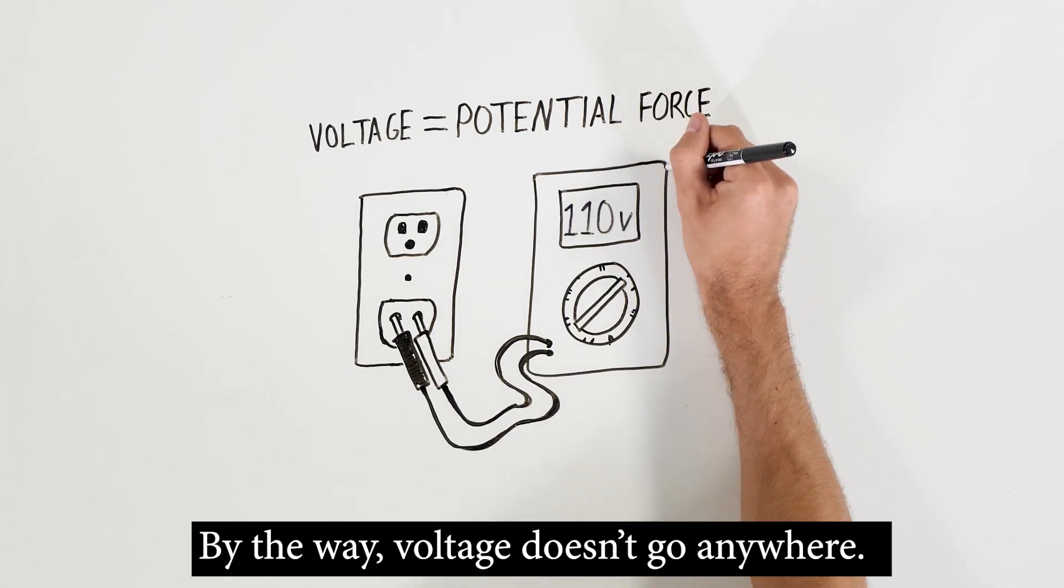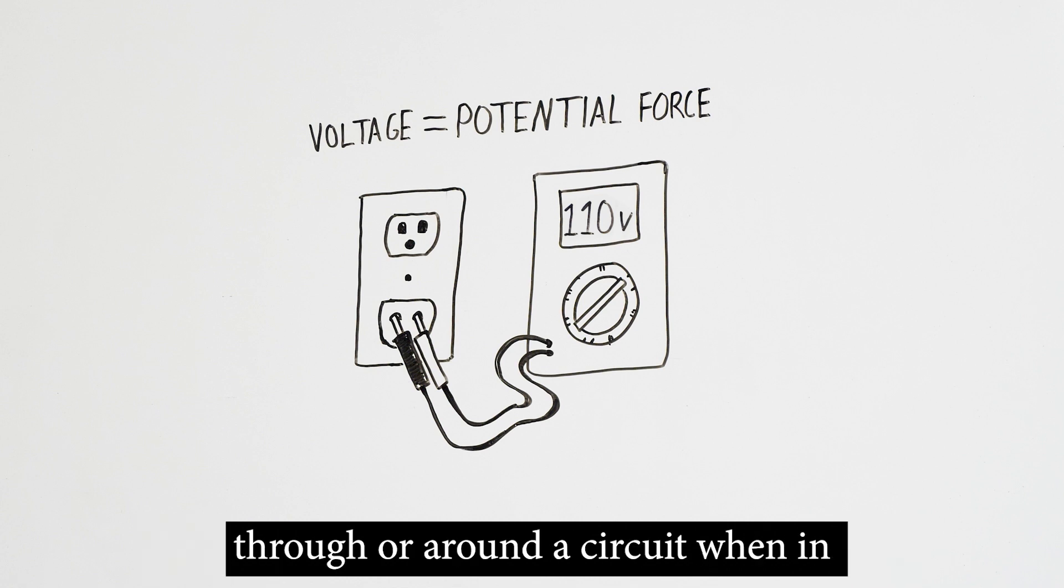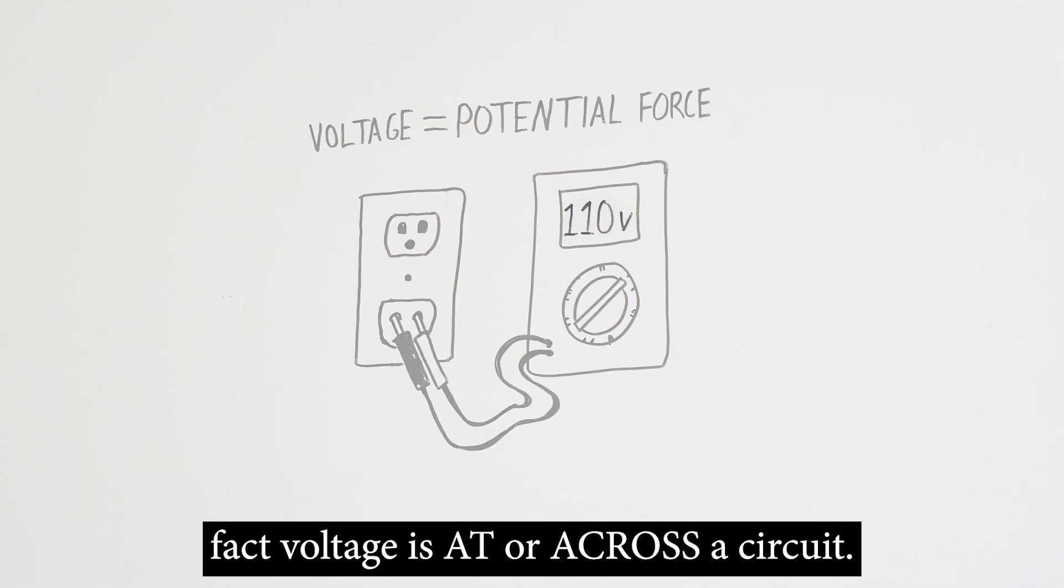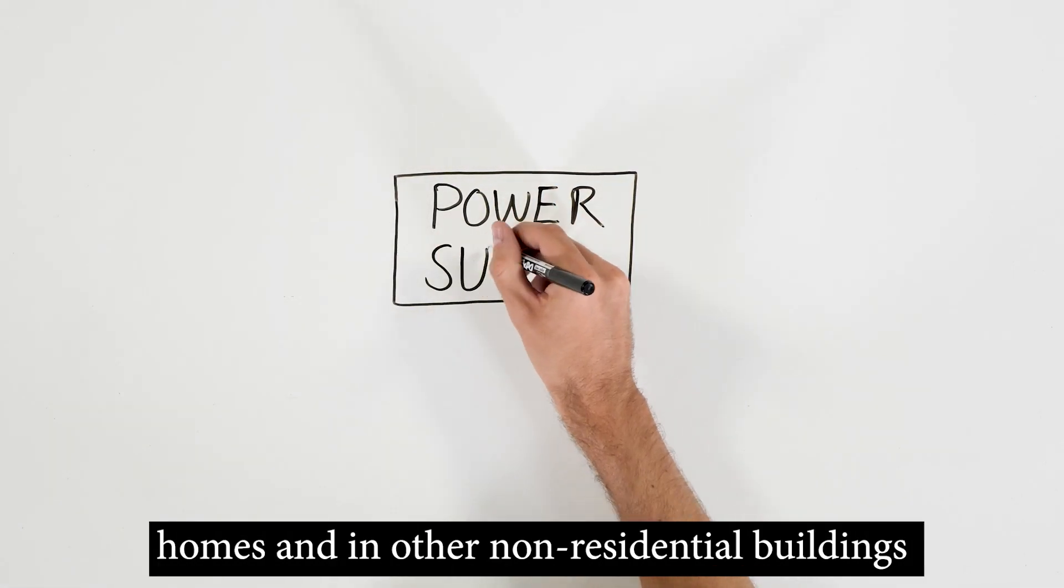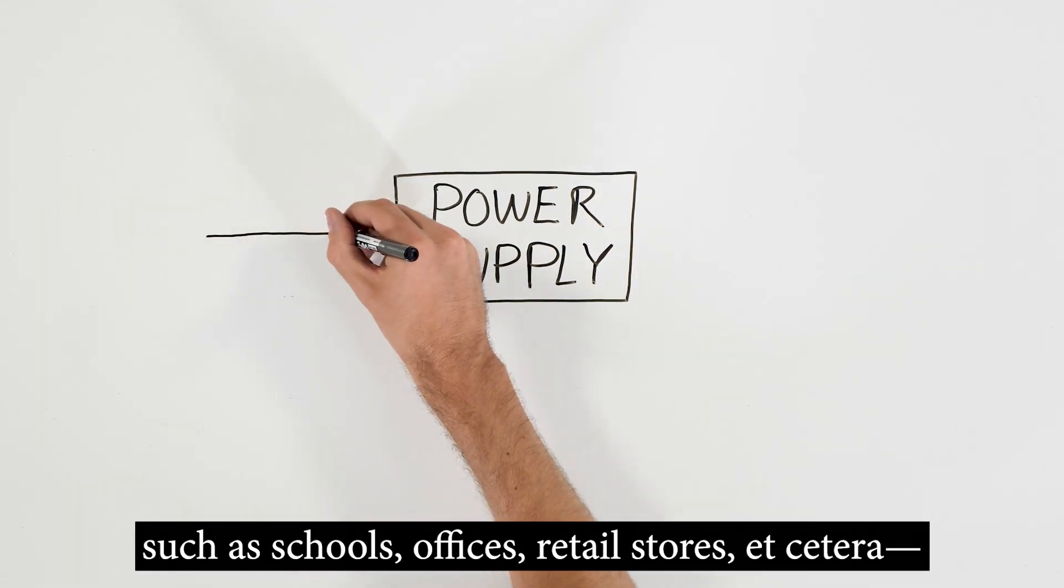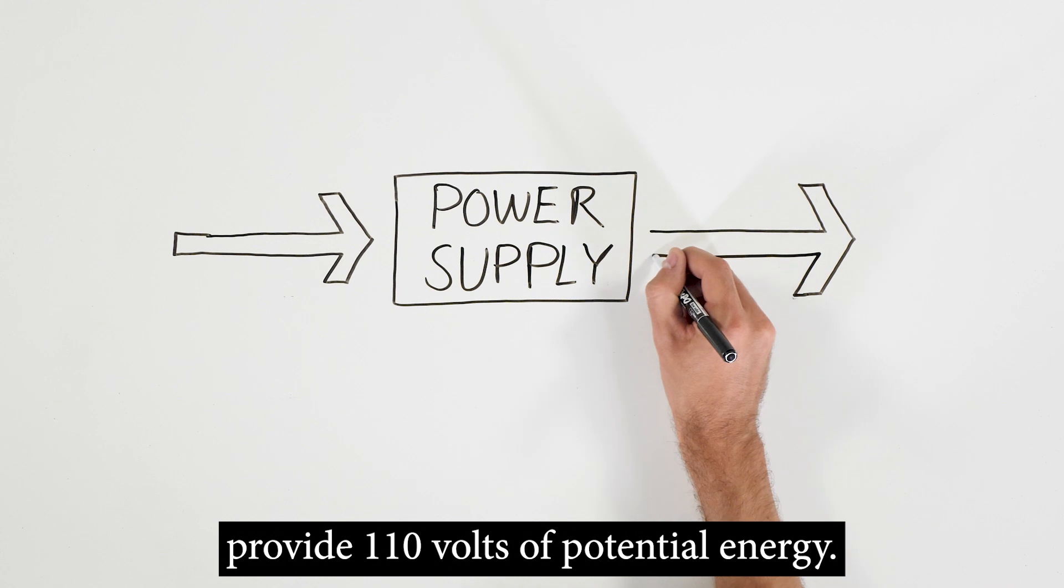By the way, voltage doesn't go anywhere. A lot of people incorrectly say that voltage goes through or around a circuit, when in fact, voltage is at or across a circuit. Most of the electrical outlets in the U.S., in our homes and in other non-residential buildings such as schools, offices, retail stores, etc., provide 110 volts of potential energy.